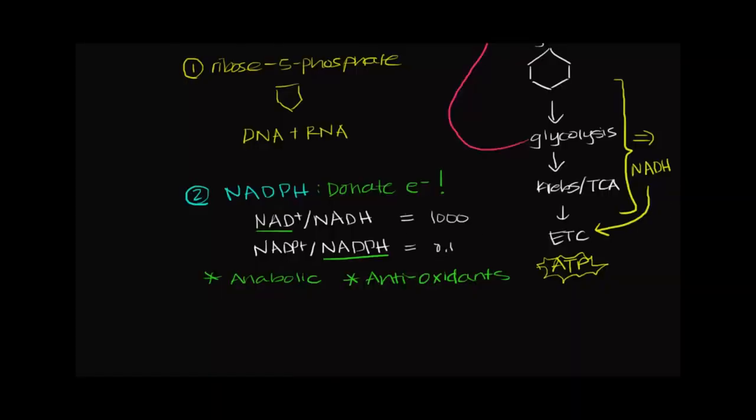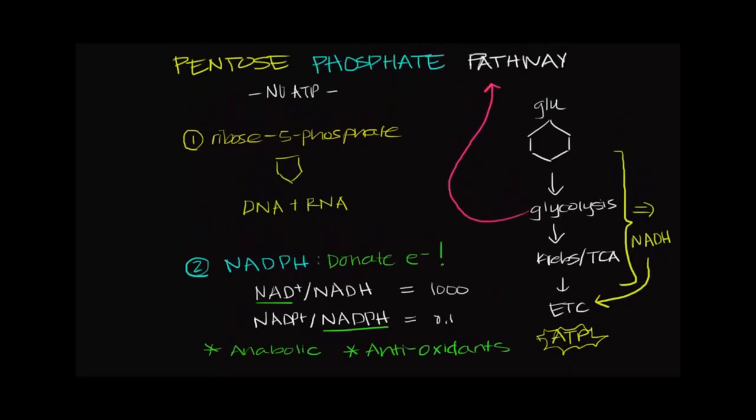And I'll return to the main slide at the beginning and just remind you that the key takeaway is that we are producing a pentose sugar, ribose, and a phosphorylated molecule, NADPH, in this pathway.